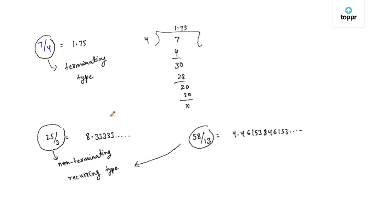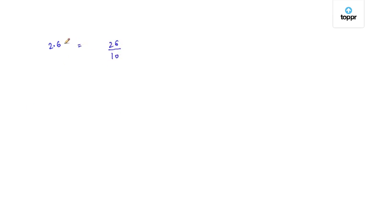We can also convert a decimal expansion to its equivalent rational number. Let's take the decimal number 2.6. Now 2.6 can be written as 26 by 10 if we omit its decimal point. If I simplify 26 by 10, it gives us 13 by 5. So we can simply say that 2.6 is equal to 13 by 5.